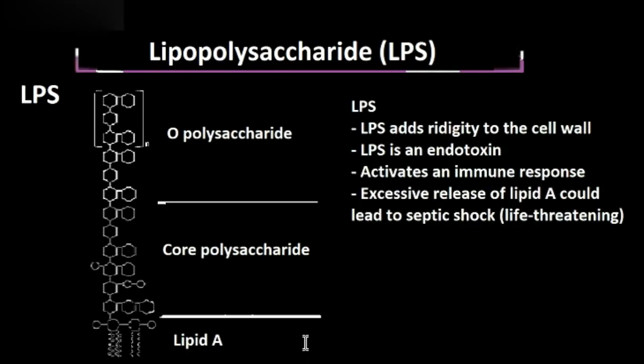Now that we've talked about the three parts of LPS, let's talk about LPS as a whole. LPS as a whole adds rigidity to the cell wall of the gram-negative bacteria. LPS also provides the bacteria an extra layer of protection — it protects the bacteria from things that can harm it, like toxins, bile salts, and antibiotics. An antibiotic is any substance that can kill bacteria or inhibit the growth of bacteria.